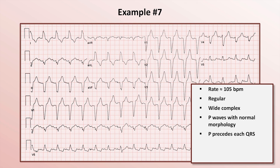The PR interval is constant and less than 200 milliseconds. Putting everything together, this is sinus tachycardia. So why are the QRS complexes wide if the rhythm is not ventricular? Remember the four causes of wide QRS complexes besides a ventricular rhythm: bundle branch block, pre-excitation, class 1 antiarrhythmics, and profound hyperkalemia.